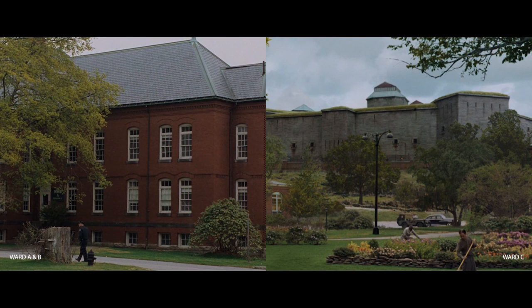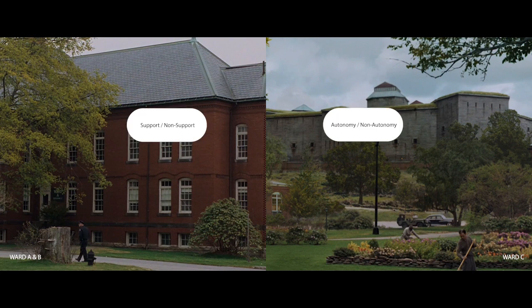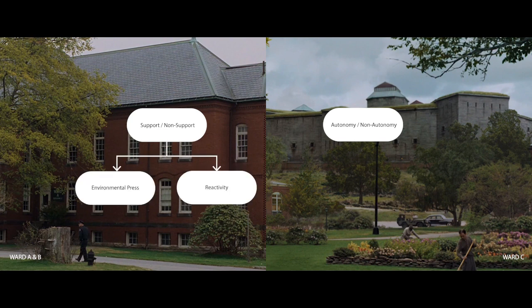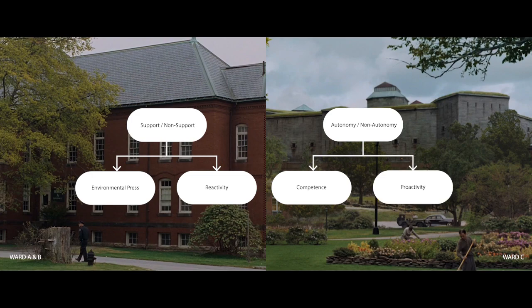Typologically, Ward A and Ward B vary drastically from Ward C in both appearance and function. When analyzed through the lens of person-environment transactions, Ward A and B provide different degrees of support and autonomy from Ward C. A supportive or otherwise non-supportive environment is defined by the environmental press or stress and the reactivity level of staff and patients. The autonomy or non-autonomy of inhabitants is defined by the competency and the proactivity of staff and patients.